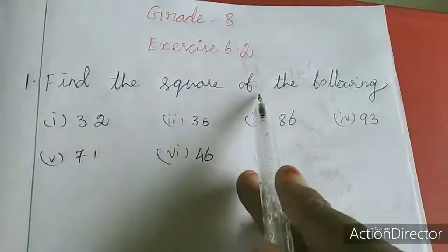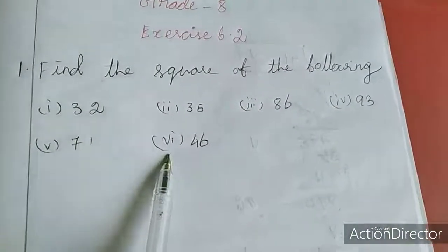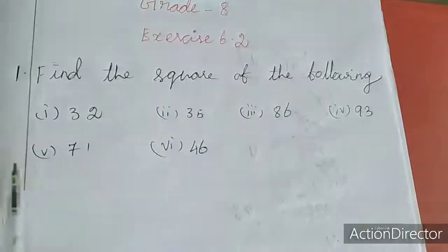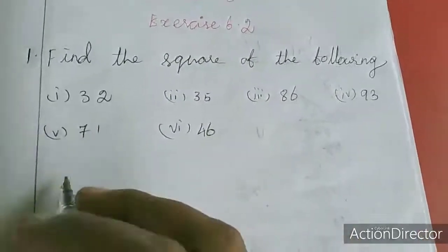First sum is find the square of the following. They gave 6 numbers, for these numbers we want to find out the square. First and last I will do, balance is homework for you. Just see the first sum.